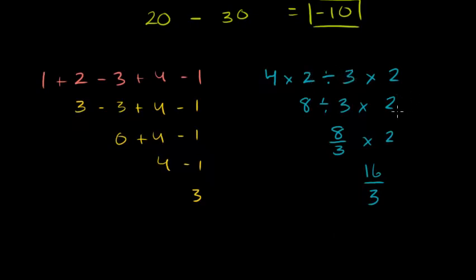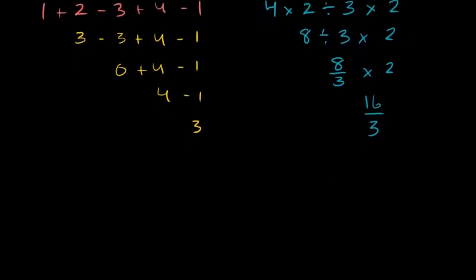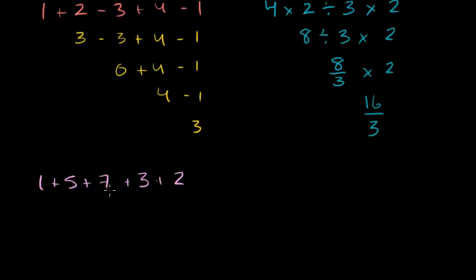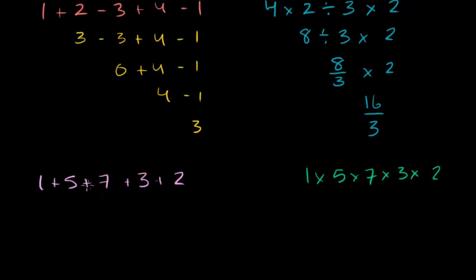Now the one time where you can be flexible with order of operations is if you have all addition or all multiplication. If you have 1 plus 5 plus 7 plus 3 plus 2, it does not matter what order you do it in. And the same thing is true for all multiplication: 1 times 5 times 7 times 3 times 2 — it doesn't matter what order you do it. But if there's any division or subtraction mixed in, you're best off just going left to right.